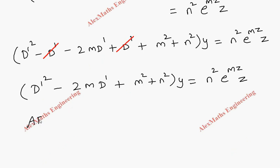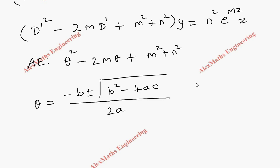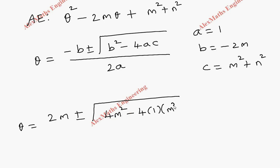Now for solving we have to write the auxiliary equation. This is already in terms of m, so let's write the auxiliary equation in terms of theta: theta squared minus 2m theta plus m squared plus n squared equals 0. From this we have to get the value of theta by using the quadratic formula: minus b plus or minus root of b squared minus 4ac, whole divided by 2a. Here the value of a is 1, b is minus 2m, and c is m squared plus n squared.